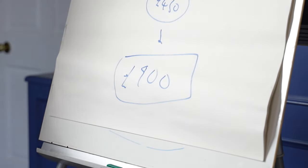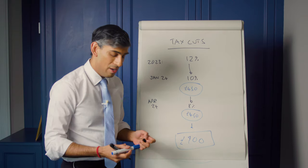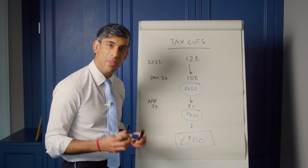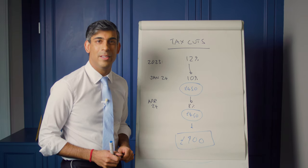Which means a total tax cut this year of £900 for a typical person in work. And that shows that our plan is working.